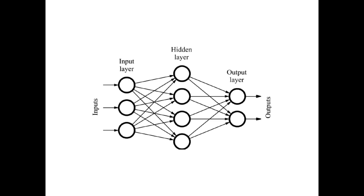In some of my prior videos we looked at feed forward neural networks. These are networks that took inputs, did some weight calculations and generated outputs. There could be several layers in the hidden layer area, but essentially the key difference between feed forward neural networks and recurrent neural networks is that in a feed forward neural network, the inputs that come in each time do not have any context or information about prior inputs.